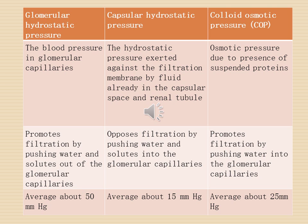Capsular hydrostatic pressure is the hydrostatic pressure exerted against the filtration membrane by fluid already inside the capsular space and the renal tubule. It opposes filtration by pushing water and solutes into the glomerular capillaries.